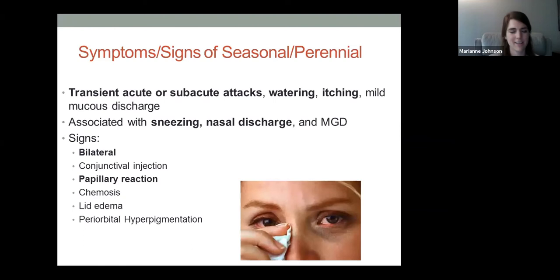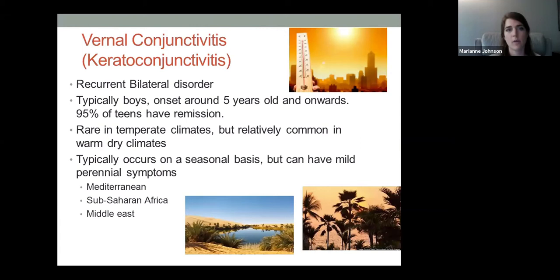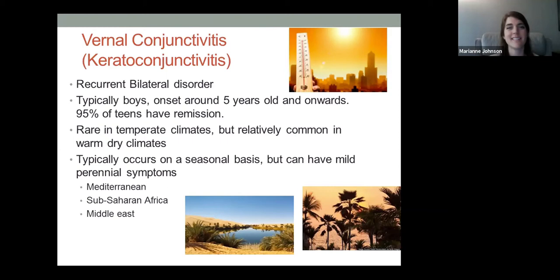Vernal conjunctivitis can involve the cornea and is a bilateral disorder. It's thought to be caused by an inappropriate influx of mast cells and immune cells that house in the conjunctiva. It generally presents more in younger boys — about five years old to teenage years — then tends to go into remission and transition to atopic. It's more common in hot, dry climates and hotter seasons, less common here in Tennessee.